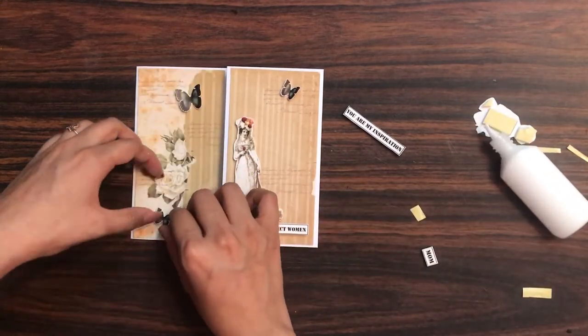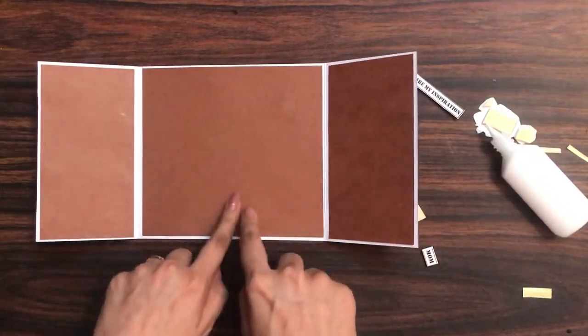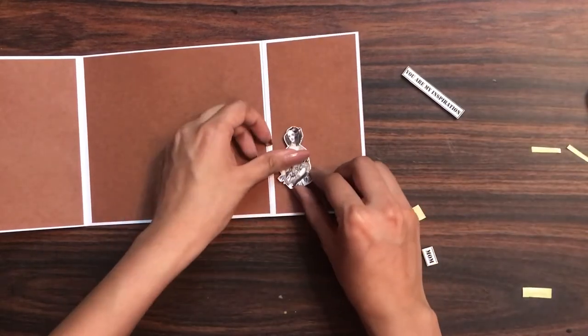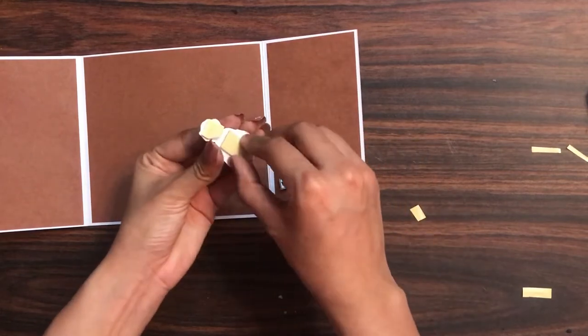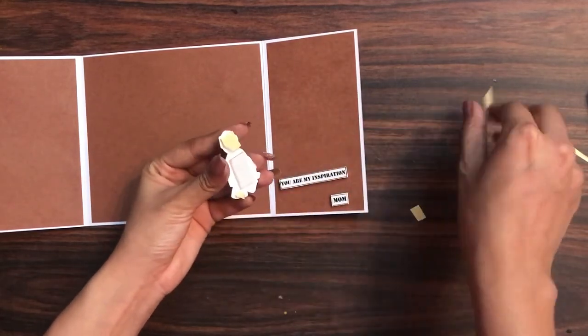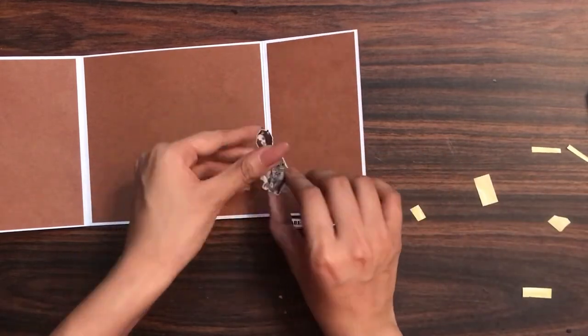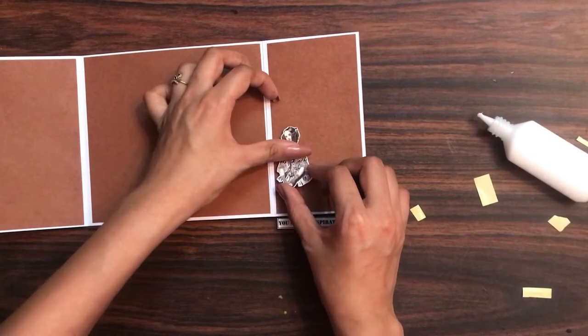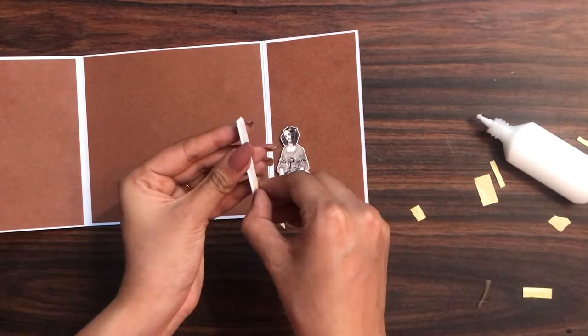Now I'm done embellishing the top of the card. Onto the inside here I'll paste a picture, then here I'll write a message. On this side I'll add this lady and beneath that I'll add the sentiment which says 'You Are My Inspiration' and the second sentiment which says 'Mom'. Onto these as well I have added 3D foam tape to give dimension to my project and make my card look more interactive.